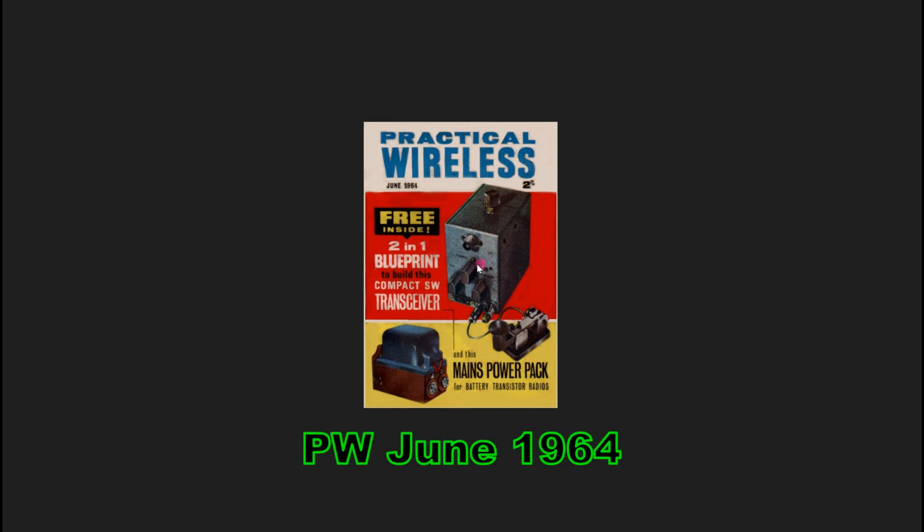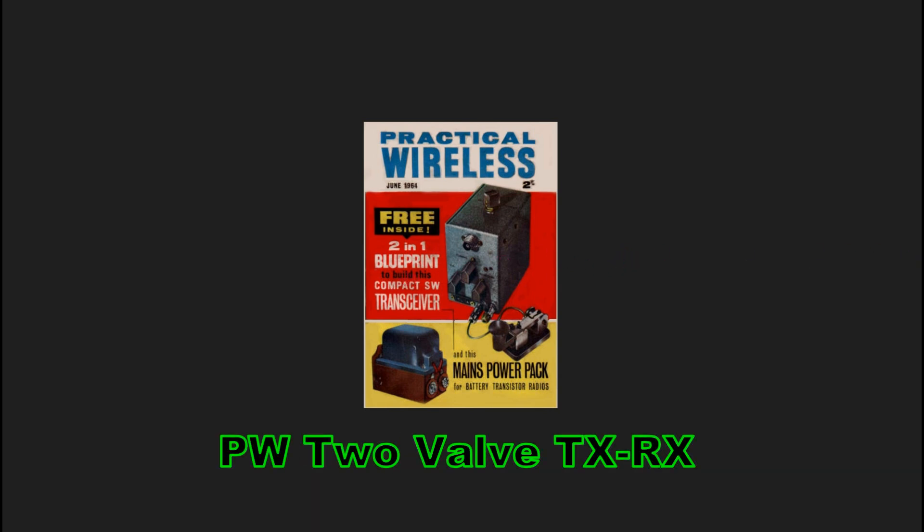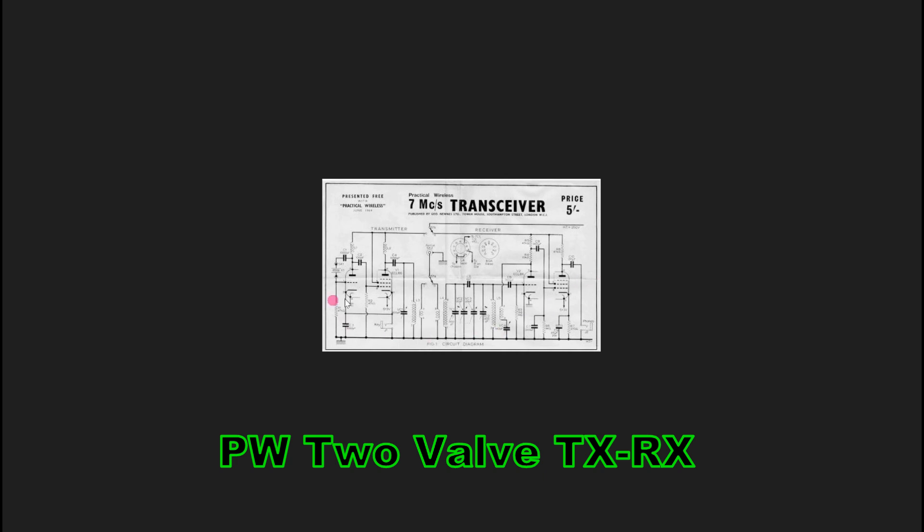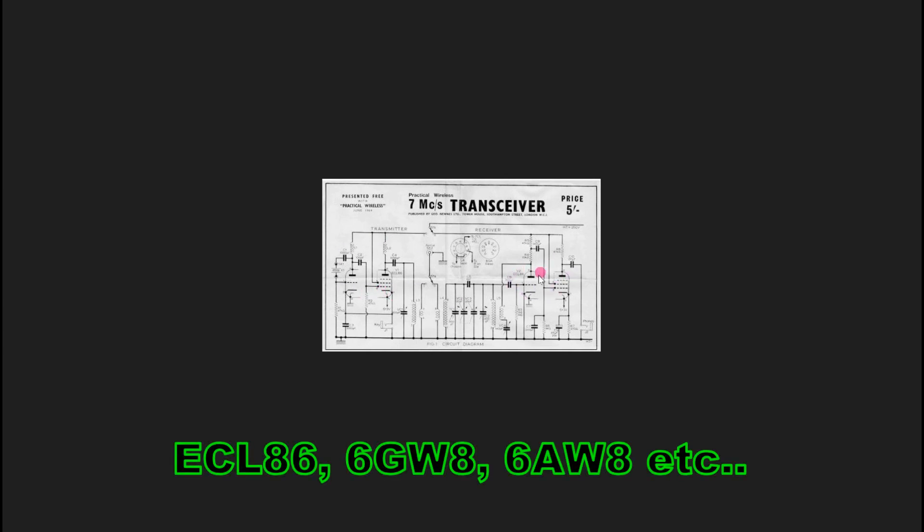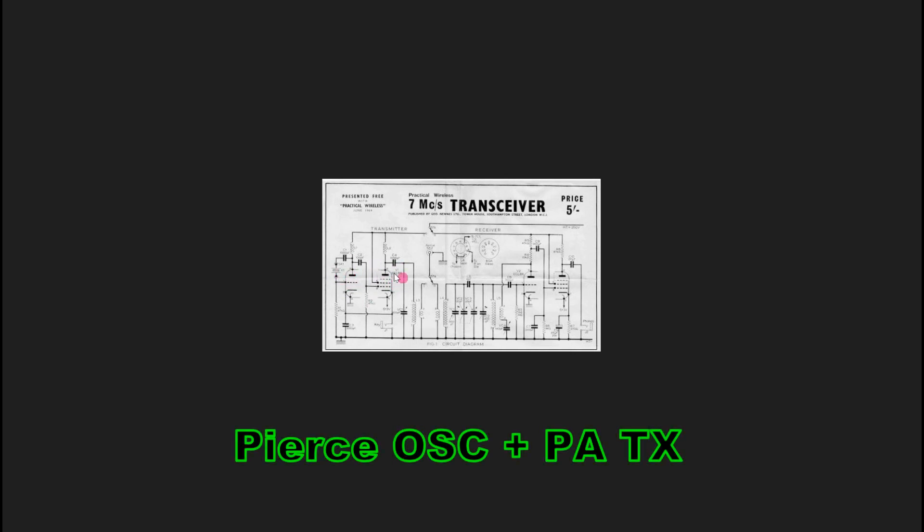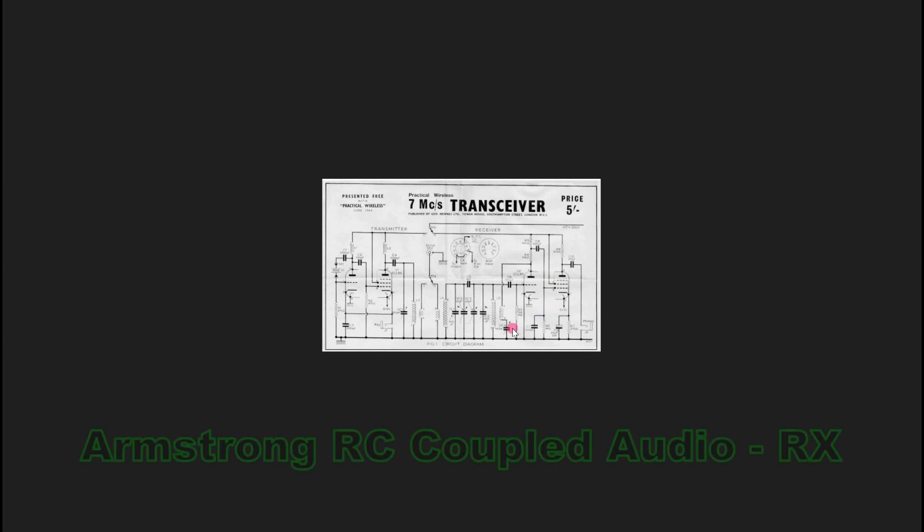So in 1964, Practical Wireless takes a shot at a two tube transmitter receiver. And it uses a couple of those triode pentode 6AW8 style valves. One is, of course, the Pierce oscillator with a little amplifier for the transmit side. And on the receive side, we have an Armstrong receiver with a one stage of audio amplification.